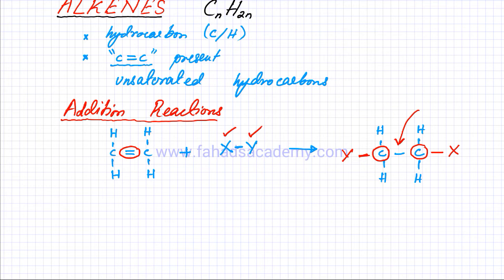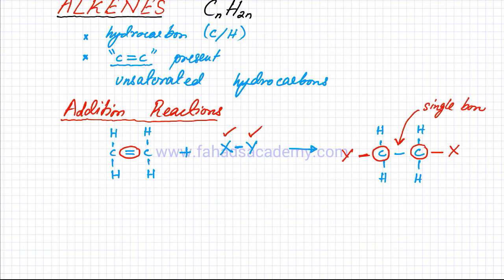So this is called an addition reaction — it's always going to happen in the same way. The double bond in an alkene is going to break apart and be converted into a single bond. Then the molecule XY breaks up into two parts: one part is added to one carbon atom, and the other part is added to the other carbon atom.